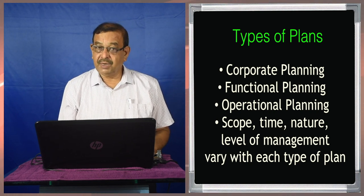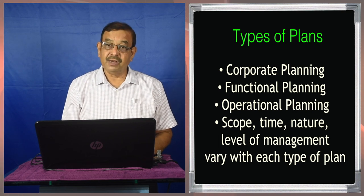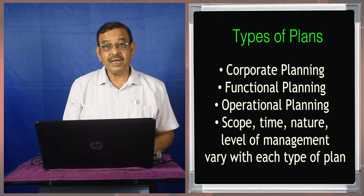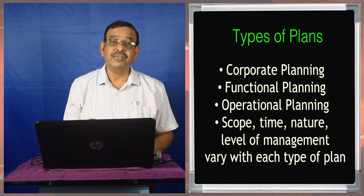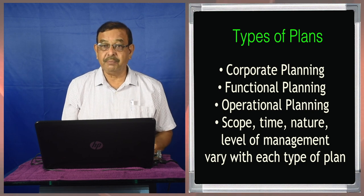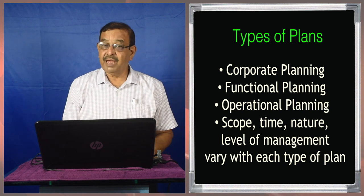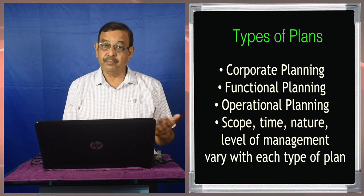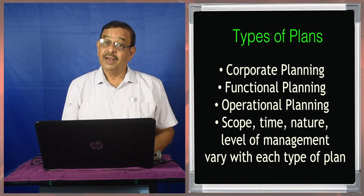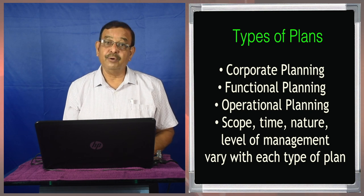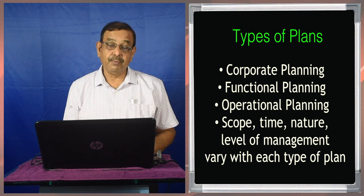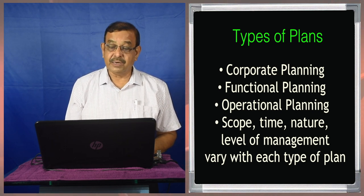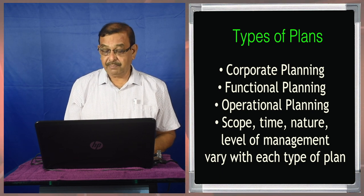With all these types of plans — be it corporate plans, functional plans, or operational plans — the scope of the plans differs. Corporate plan has a much wider scope, whereas a daily or hourly plan has scope with respect to only one particular period. The time dimension will be there. Strategic planning will be for the entire organization, operational planning for a particular unit. The nature and level of management involved in planning will also differ — top-level management engaged in different kinds of planning than bottom-level management.